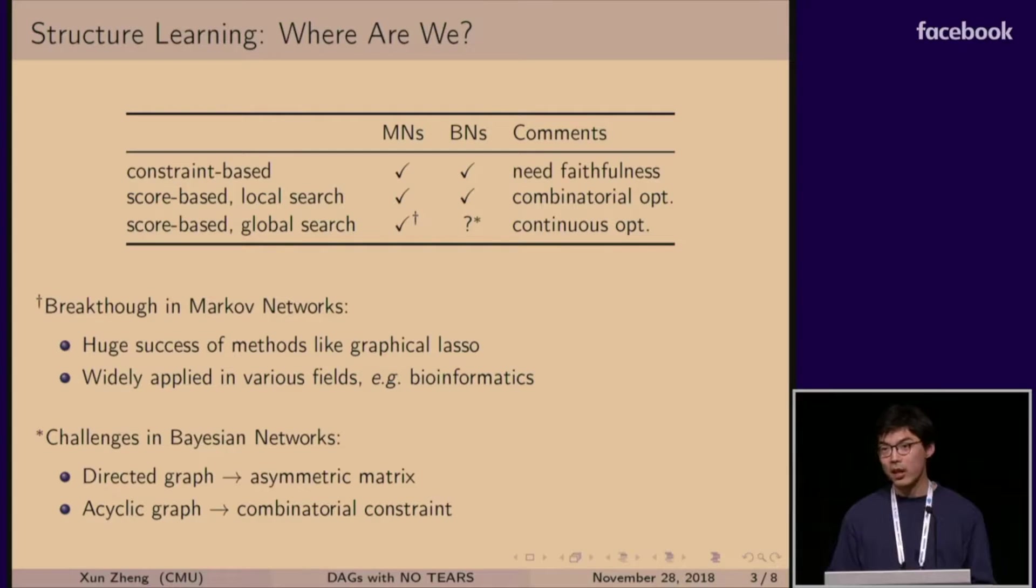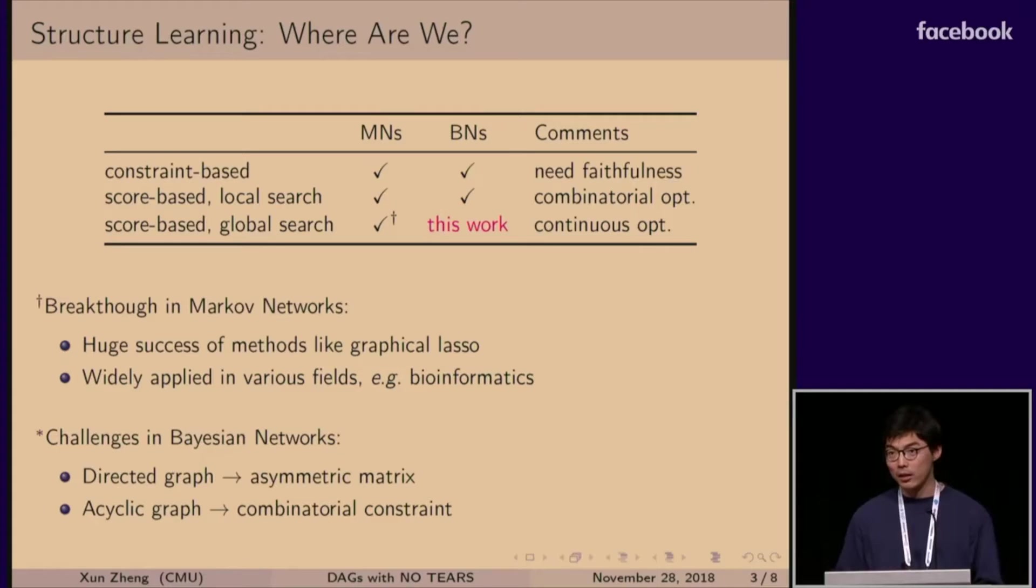But there are certain challenges in Bayesian networks. First of all, you have to deal with directed graph, which means you have to deal with non-symmetric matrices, and it's hard to deal with non-symmetric matrices. And you also need to constrain your graph to be acyclic. So that's by nature a combinatorial constraint. So this paper is about taking the first step into addressing these challenges by converting a combinatorial optimization problem into a continuous one.